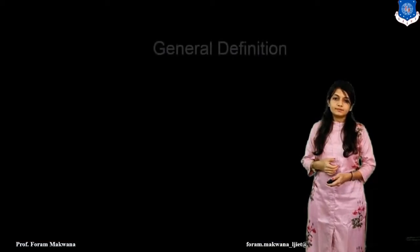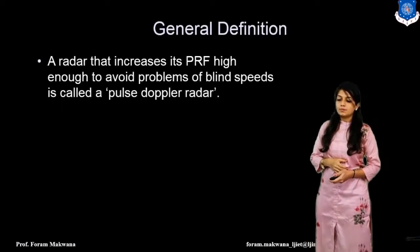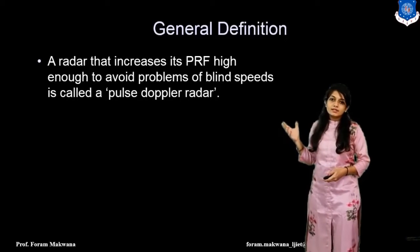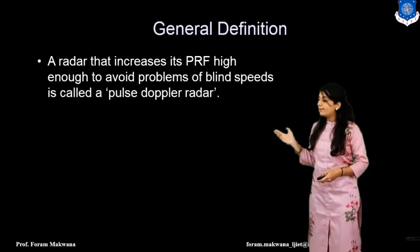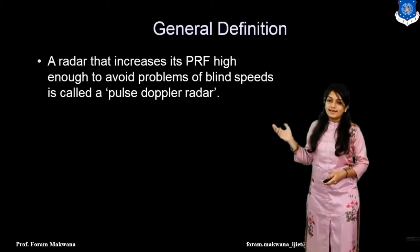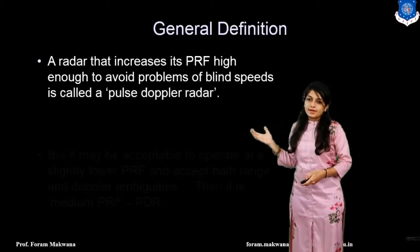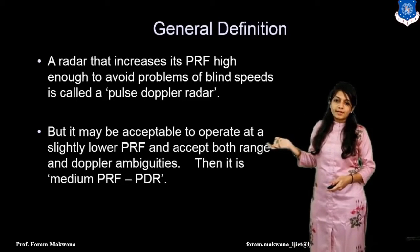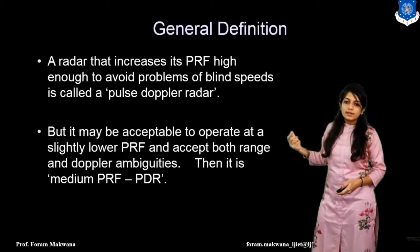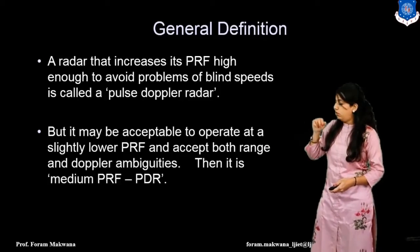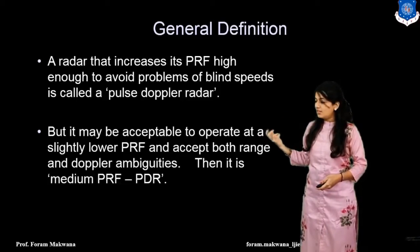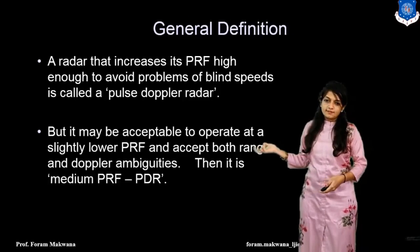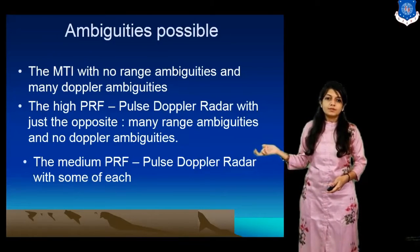What is the general definition of the Pulse-Doppler radar? A radar that increases its PRF high enough to avoid the problems of blind speed is called a Pulse-Doppler radar. It may be acceptable to operate at a slightly lower PRF, because it may need to accept both range and Doppler ambiguities — so that is a medium PRF Pulse-Doppler radar.